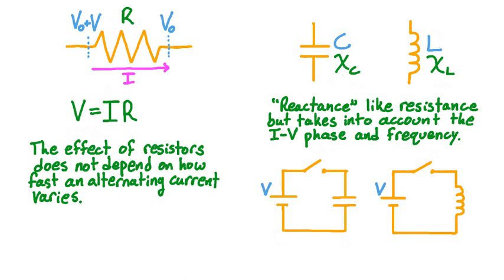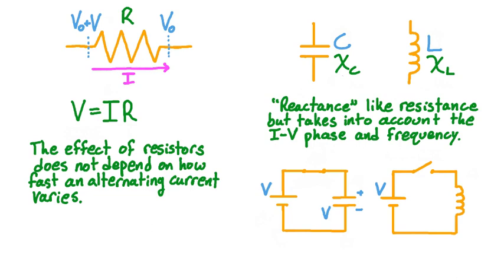Before working out these reactances, it's worth noting how capacitors and inductors behave in direct current circuits. We've drawn two similar circuits, one with a capacitor and one with an inductor. Each circuit also has a cell with voltage V and a switch to turn it on. As soon as we close the switch in the circuit with the capacitor, the electromotive force starts driving current to deposit charge on the capacitor plates. However, as the capacitor continues to charge, it develops a growing voltage that opposes the EMF of the cell. This results in a diminishing current that eventually disappears entirely when the voltage across the capacitor equals the voltage of the cell. Shortly after the switch is closed, the capacitor acts like a conducting wire, but a long time after the switch is closed, the capacitor acts like an open circuit.